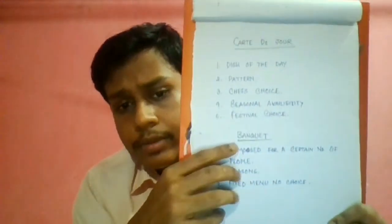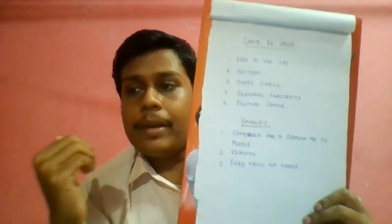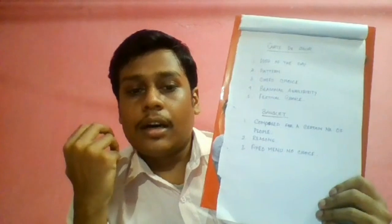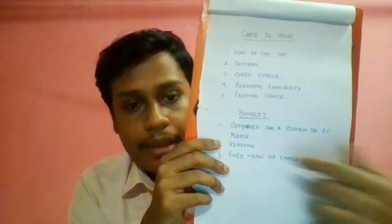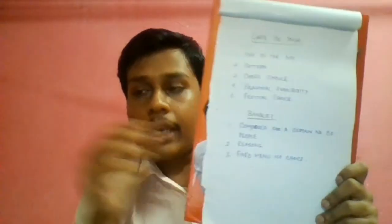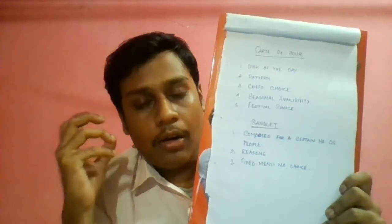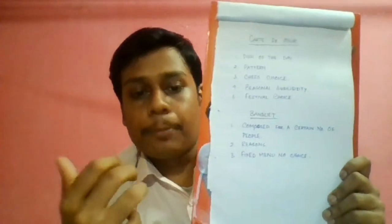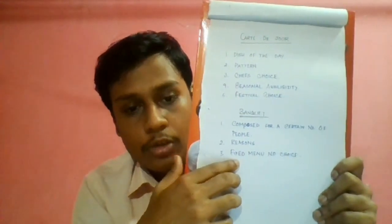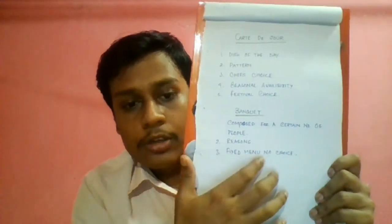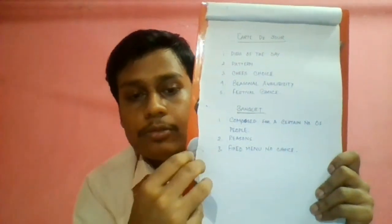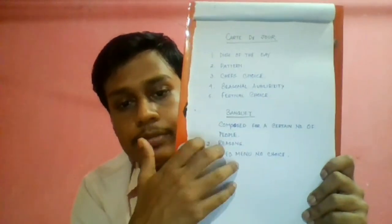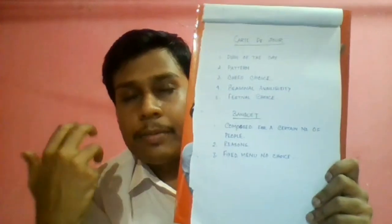Banquet menus are basically served for social gatherings like marriage parties, anniversaries, or funerals. The menu is composed for a certain number of people, since every party has a fixed number of guests. The host — the person who arranges the party — decides and fixes the menu. The menu is fixed based on the reason for the gathering, whether it is a marriage party or a funeral.